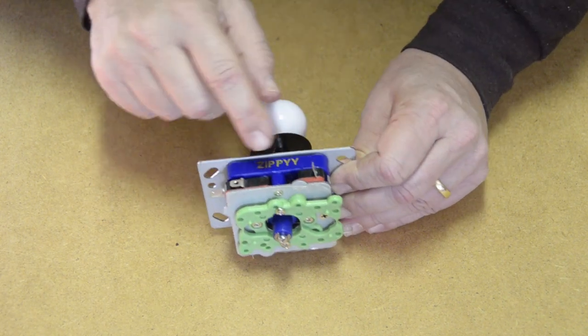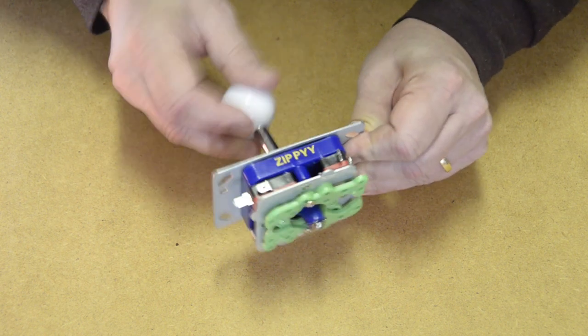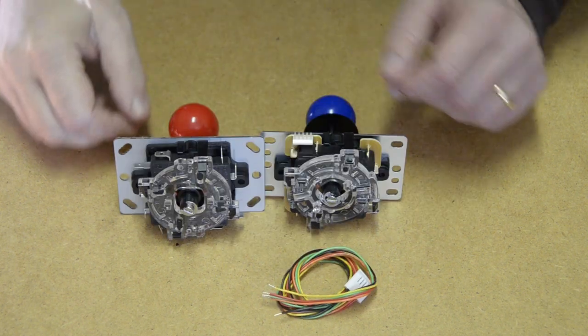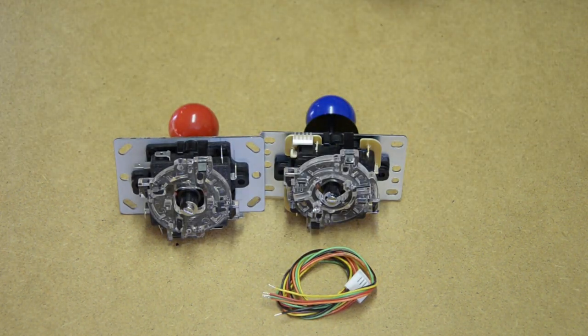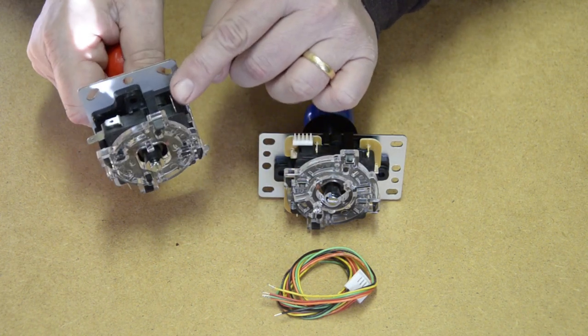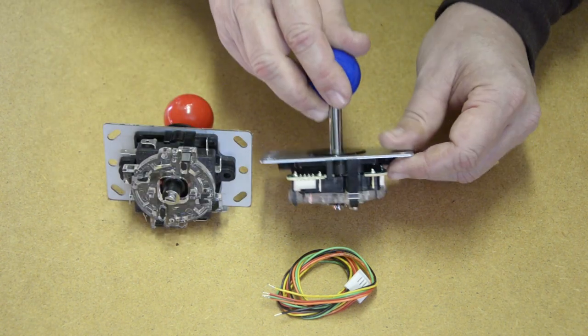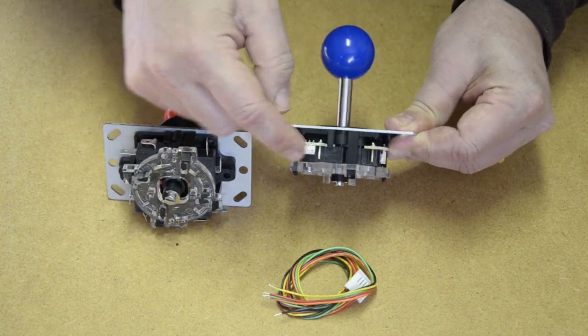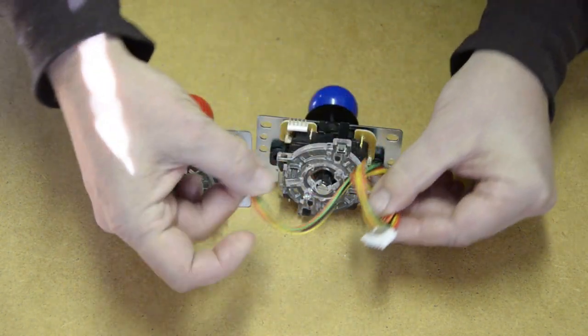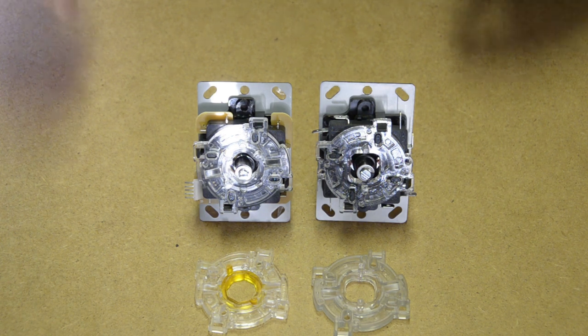Some sticks allow you to swap out the switches for other ones once you've made up your mind about what you prefer. Most switches allow you to connect wires directly using flat connectors. However, a growing amount of sticks come with five-pin connectors nowadays, so think about that when you're going to build your own stuff.